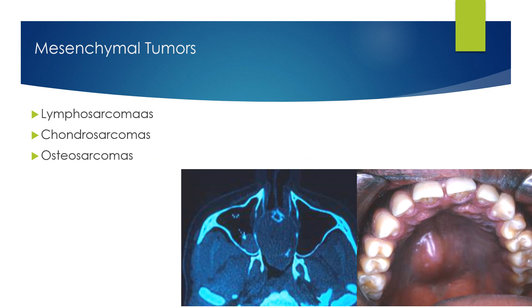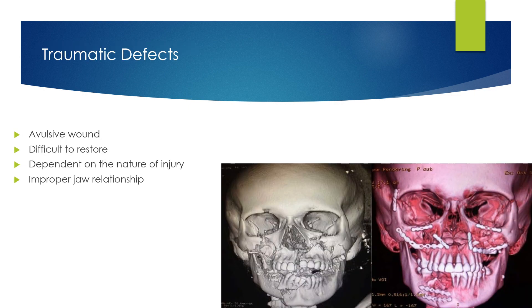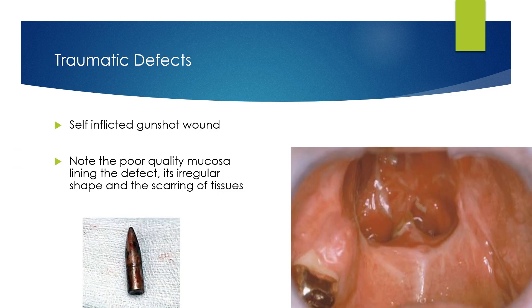Mesenchymal sarcomas of the head and neck area are relatively uncommon. They arise from elsewhere in the body and are highly malignant. Traumatic injuries and avulsive wounds are difficult to restore; the defect varies considerably and is dependent on the nature of the injury, often causing improper jaw relationship. Trauma-induced defects such as self-inflicted gunshots are irregular in shape and size; the soft tissue is heavily scarred and difficult to treat.